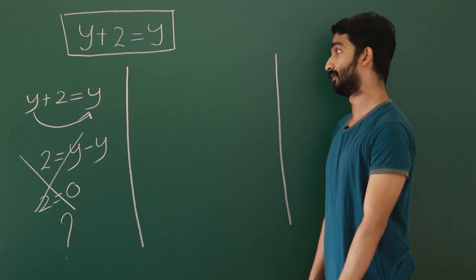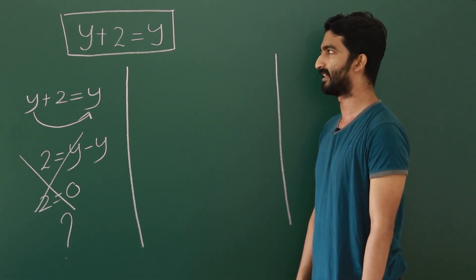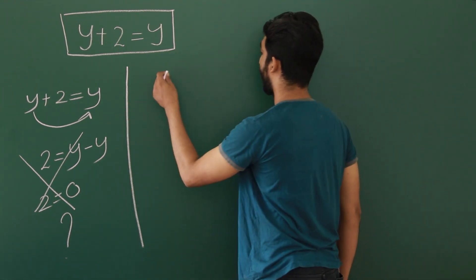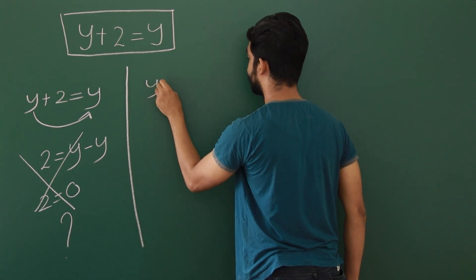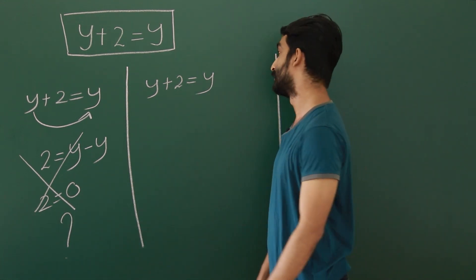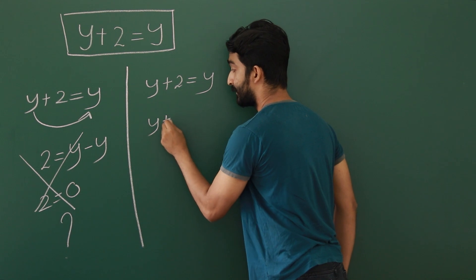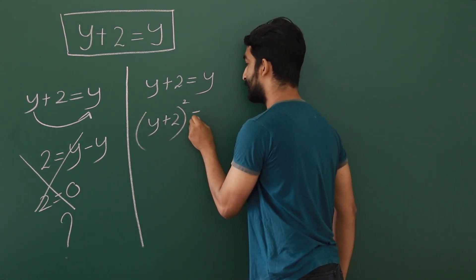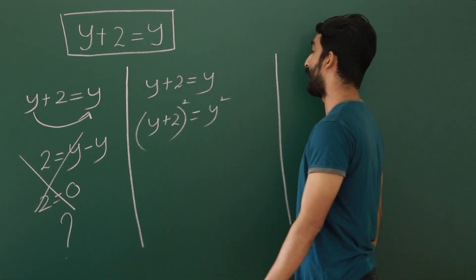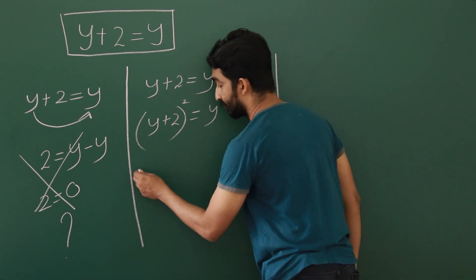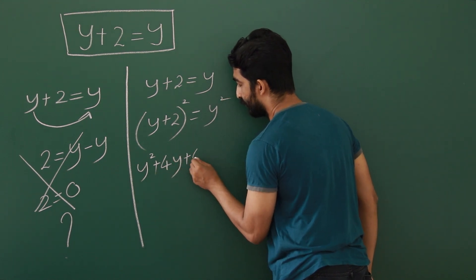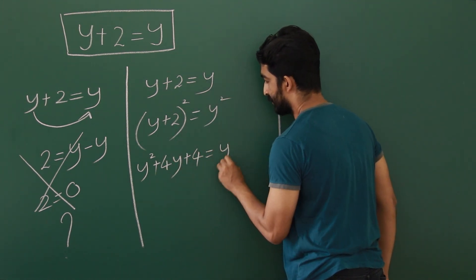We are using one mathematical trick to solve this linear equation. What we do is, we have y plus 2 equals y. We are squaring both sides, so it is y plus 2 square equals y square. We square both sides of the equation. And now we can expand this y plus 2 square, which will be y square plus 4y plus 4 equals y square.